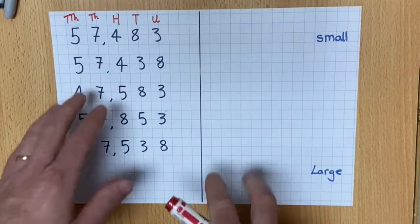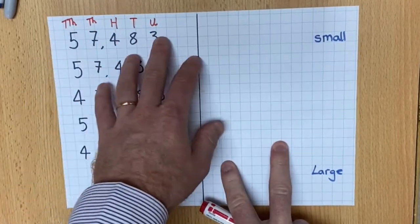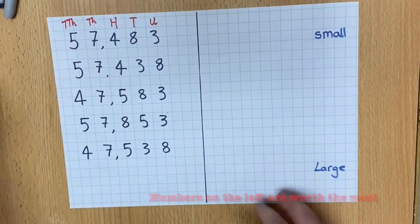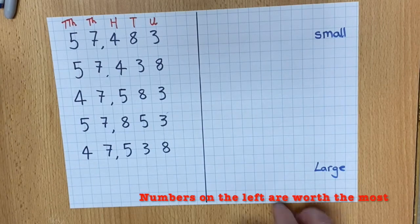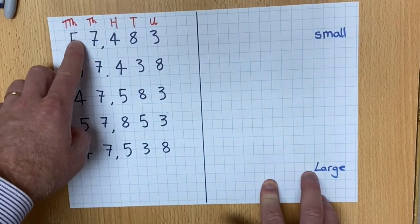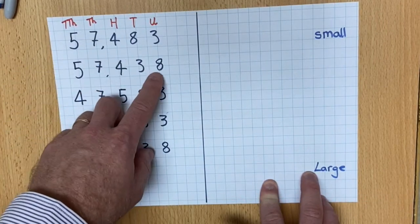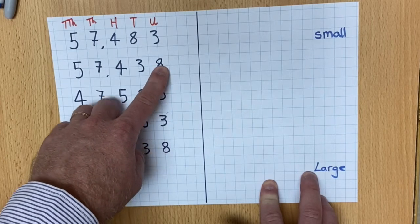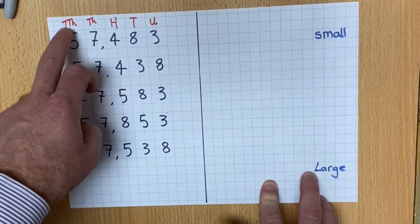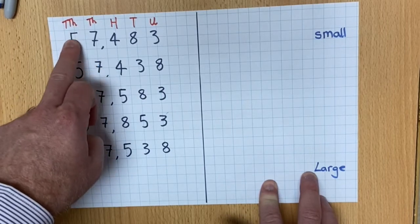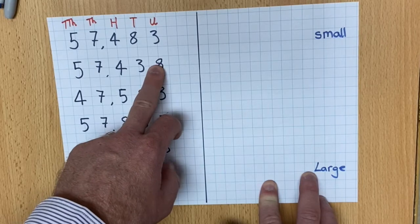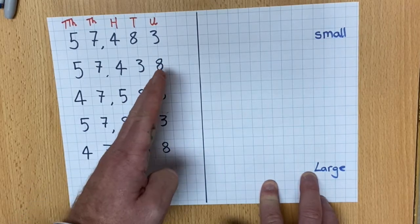Now out of all those numbers, the number that is furthest to the left is always the number that is worth the most. So this five here is worth a lot more than this eight, even though the eight is a bigger number. This five, because it's in the ten thousands column, is actually fifty thousand and this is only eight. So you need to think about that.